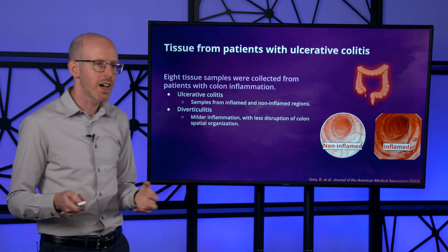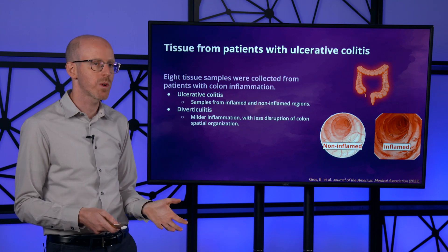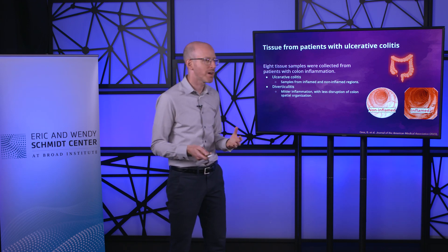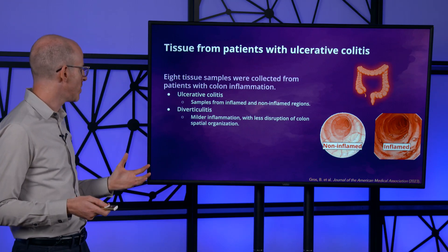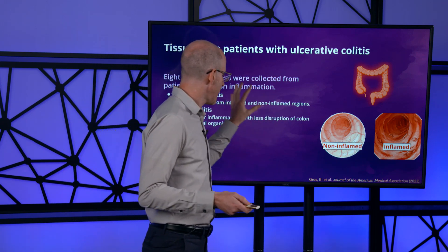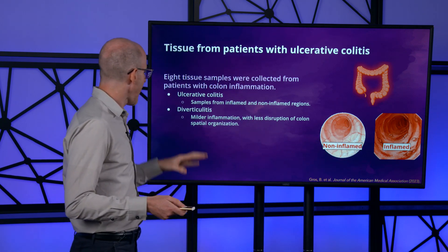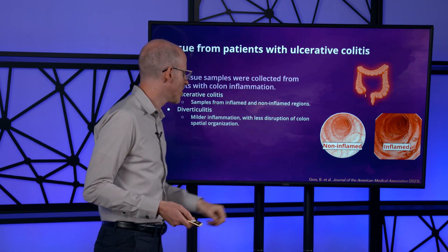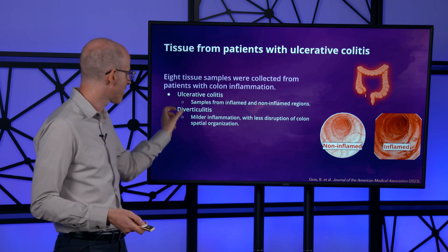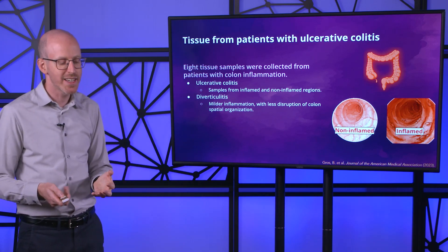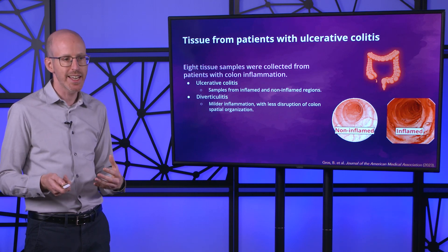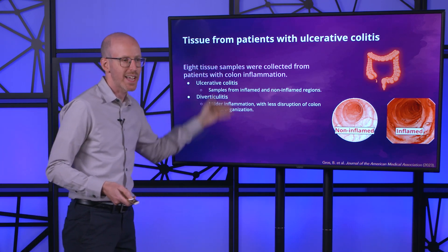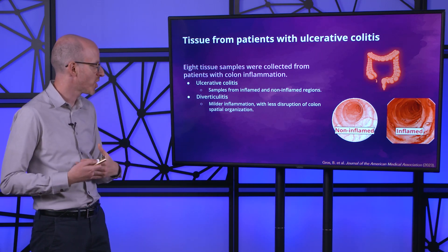The collection of clinical samples from ulcerative colitis patients was spearheaded by Dr. Ramnik Xavier, one of the organizers of this challenge, and Dr. Angela Shi, a pathologist at Harvard Medical School and Massachusetts General Hospital. They collected eight tissue samples from patients with colon inflammation — both inflamed and non-inflamed regions from ulcerative colitis patients. We also have a few samples from a milder form of inflammation called diverticulitis, which is provided because there's less change to colon spatial organization, making it a good reference point when comparing healthy colon to heavily inflamed colon in ulcerative colitis.